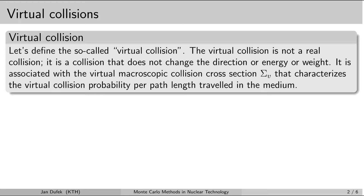So let's define the virtual collision now. A virtual collision is basically not a real collision. It is a collision during which the direction of the neutron remains the same and also the energy of the neutron remains the same. So the direction vector omega prime after the virtual collision equals the omega vector before the collision, and the energy of the neutron after the collision is also the same as the energy of the neutron before the virtual collision.